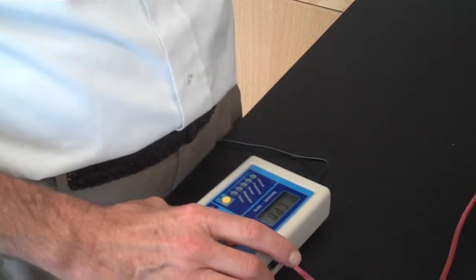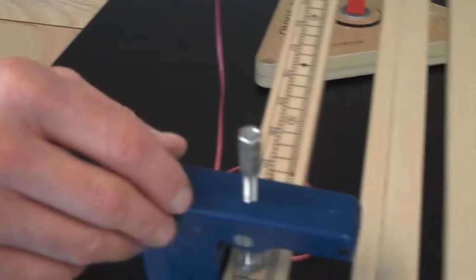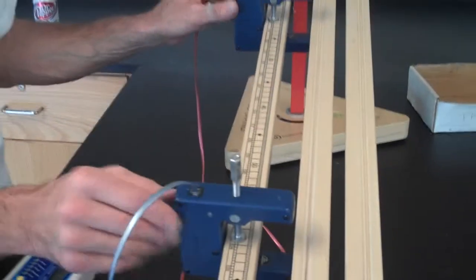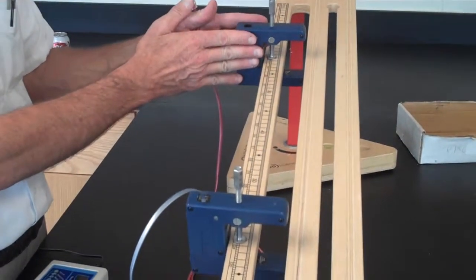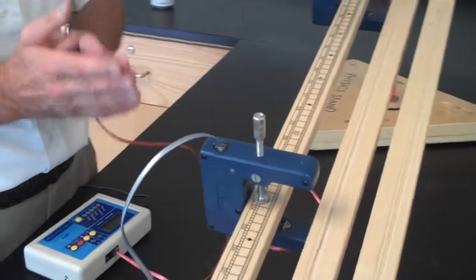One final little hint for you is that when you're using two photo gates, make sure that you have them set up so that the top gate is always photo gate A and the bottom gate is always photo gate B.